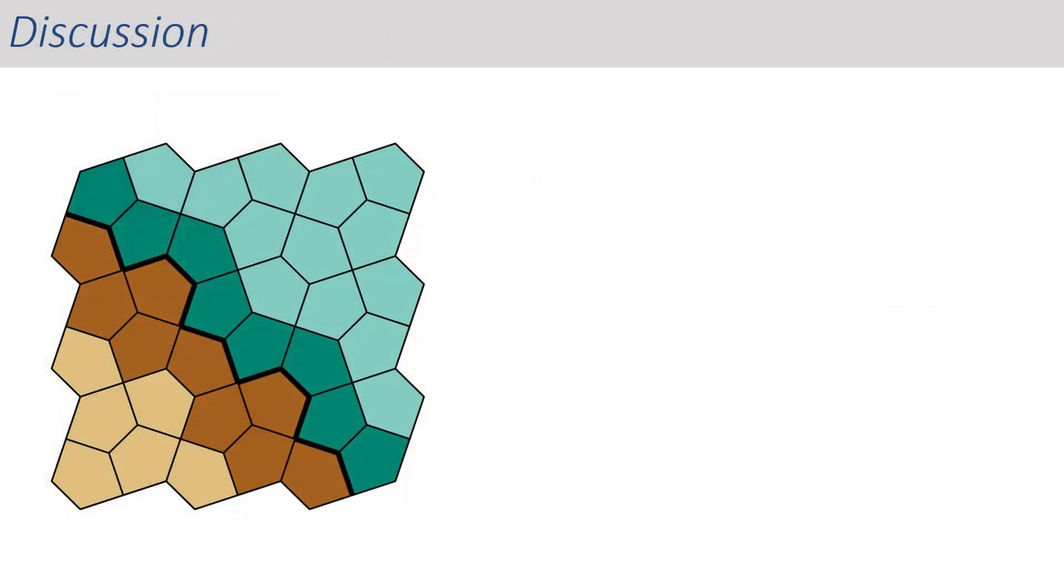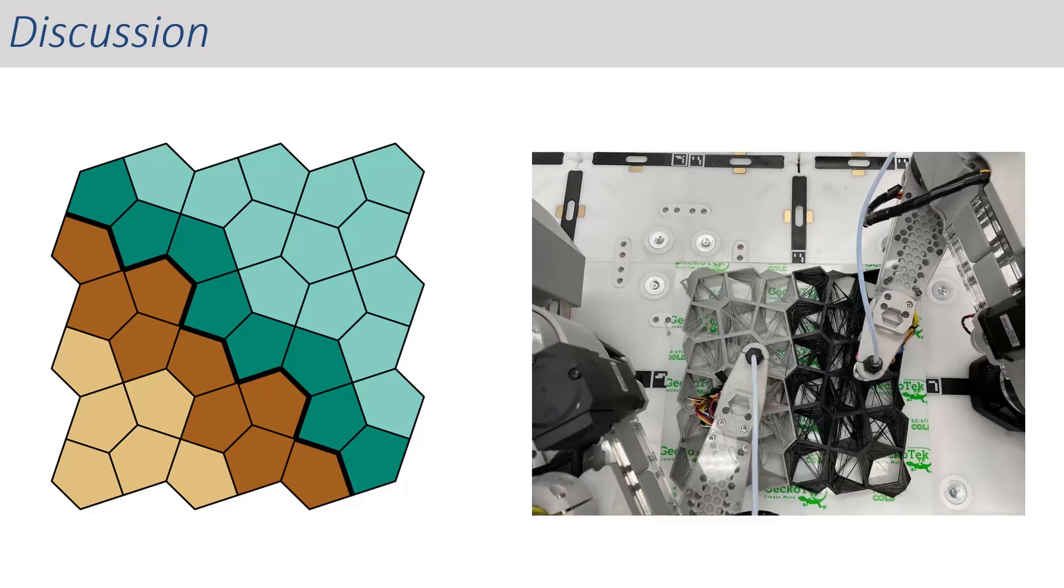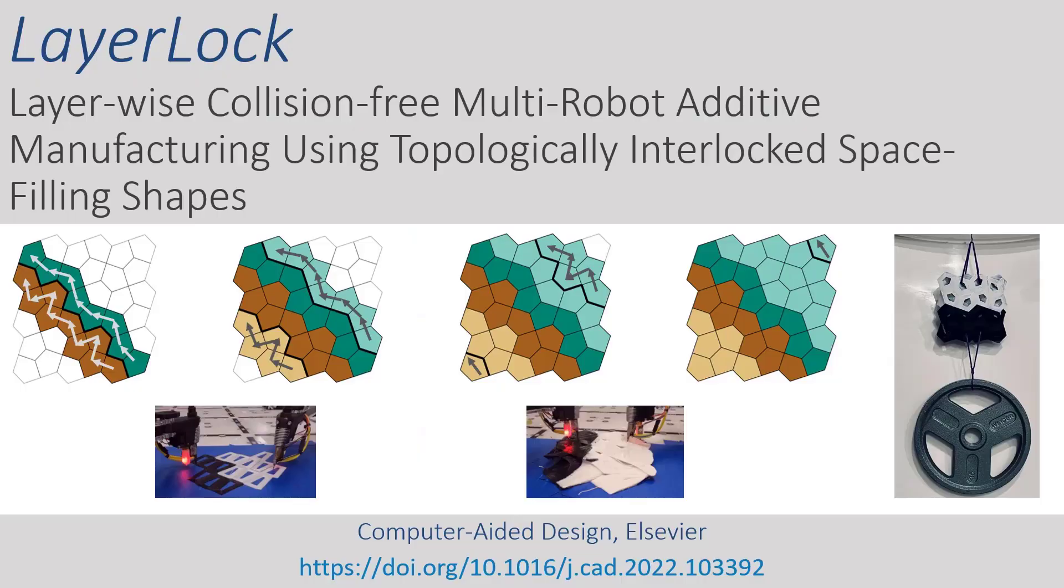In principle, the LayerLock algorithm is generalizable to any type of cell pattern, as well as any number of robots. However, such extensions require additional research in terms of robot synchronization, dynamic communications between robots, and geometric steps to account for disconnected regions and holes within a given layer geometry.